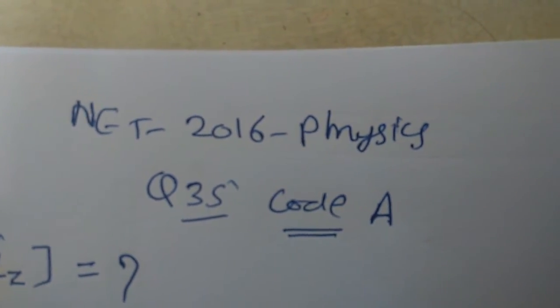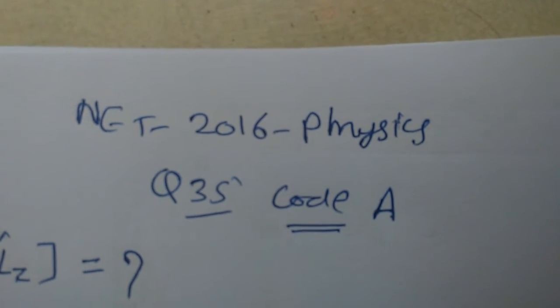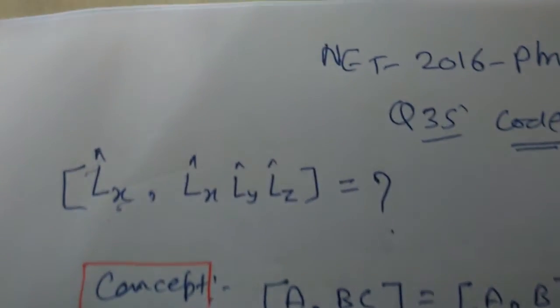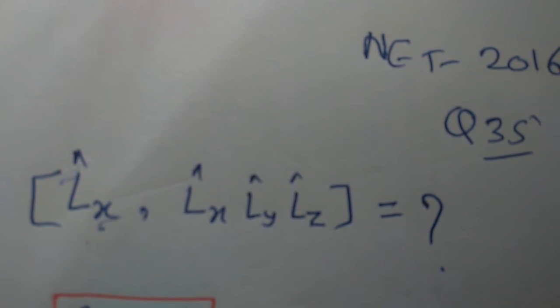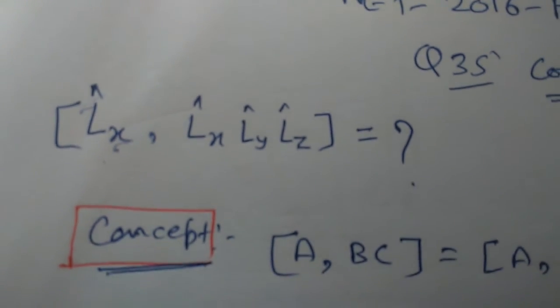NET Physics 2016, question number 35, code A. We have to find [Lx, Lx Ly Lz], the commutator.